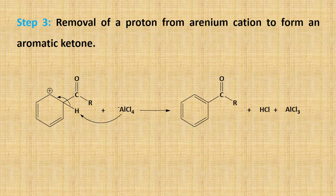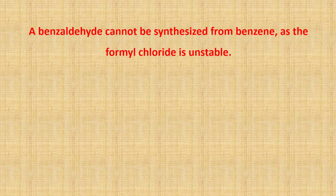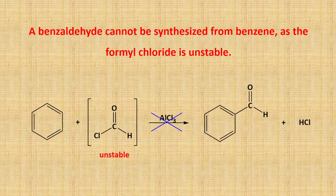Step 4: the acylation must be performed with more than one equivalent of aluminium trichloride. However, a problem associated with Friedel-Crafts acylation is that it cannot form benzaldehyde, one of the most basic aromatic ketones. Benzaldehyde cannot be synthesized from benzene using Friedel-Crafts acylation because formyl chloride, the required acyl chloride, is unstable. Therefore, further reaction cannot be carried out. In other words, aromatic aldehydes cannot be prepared using Friedel-Crafts acylation.